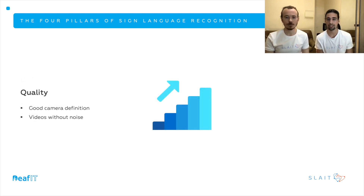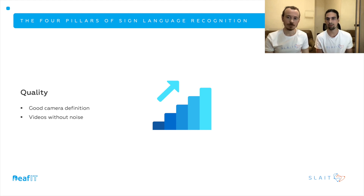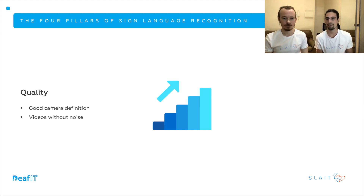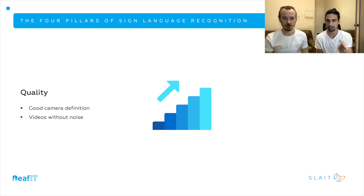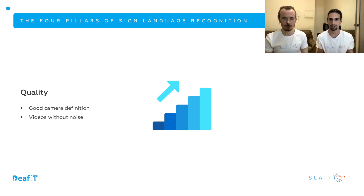Then we have quality. First of all, camera quality — like the resolution of the camera. We have some videos uploaded on YouTube and other platforms that are honestly very old, and the quality is just not good enough to detect the key features of body, arms, and facial expressions. We also need videos without noise — meaning the sign cut from beginning to end properly, with no other movements and no other people appearing in the video. It needs to be clear and understandable for the artificial intelligence.